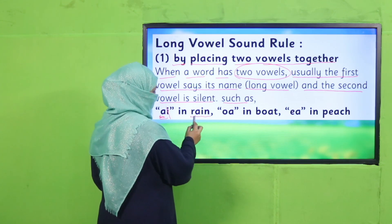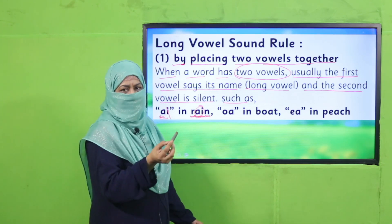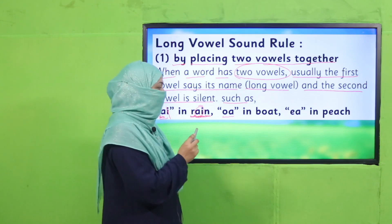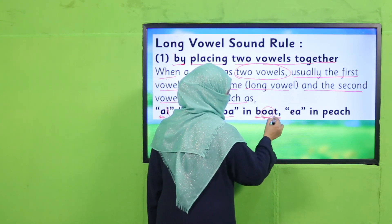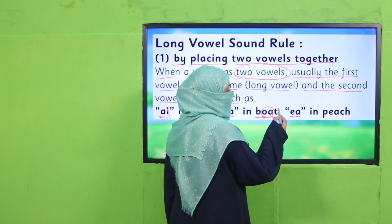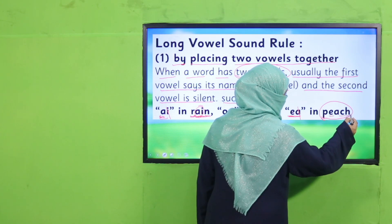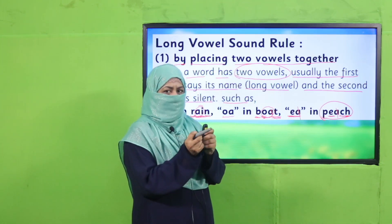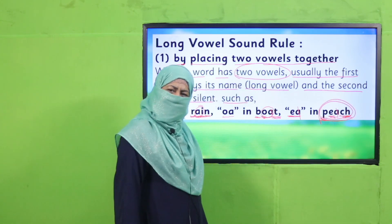For example: R-A-I-N — the two vowels A and I together give the long A sound: 'rain.' Next: B-O-A-T — the vowels O and A together; O gives its long sound and A stays silent: 'boat.' Next: P-E-A-C-H — the vowels E and A together; this is a digraph where A is silent and E gives its long sound. Let's join the sounds: E-each — 'peach.' You got it — good, smart!